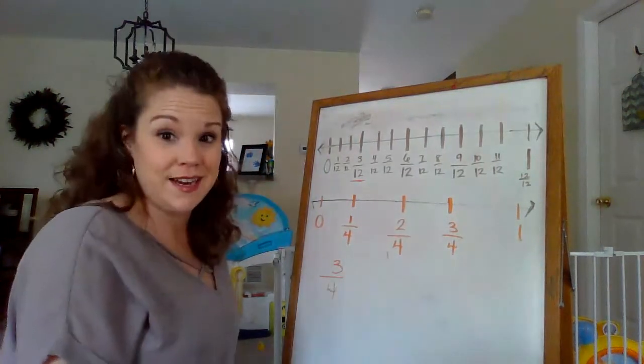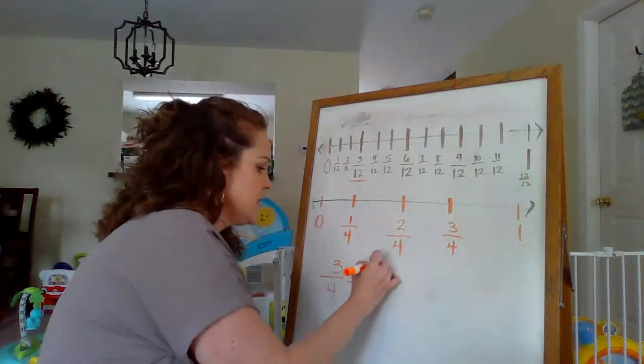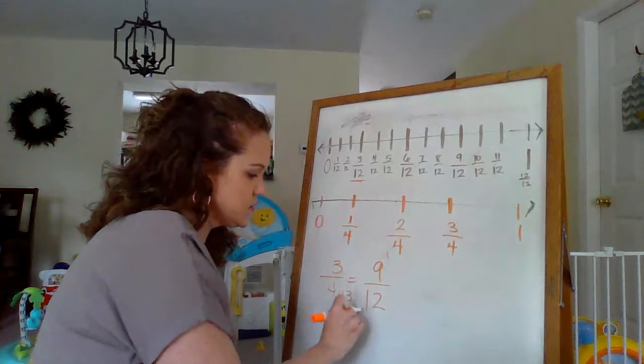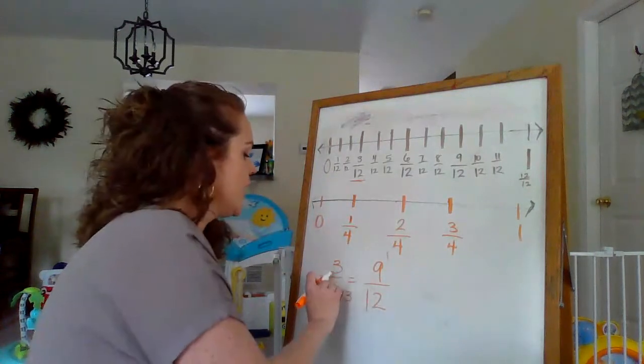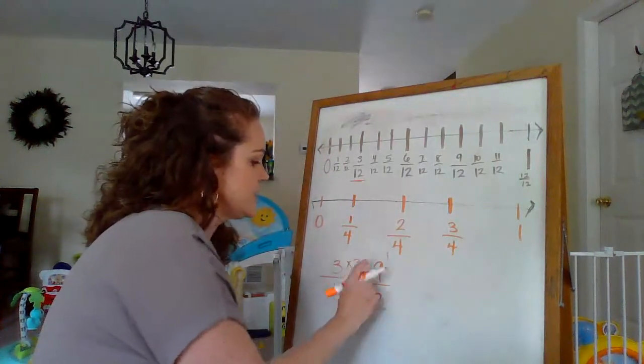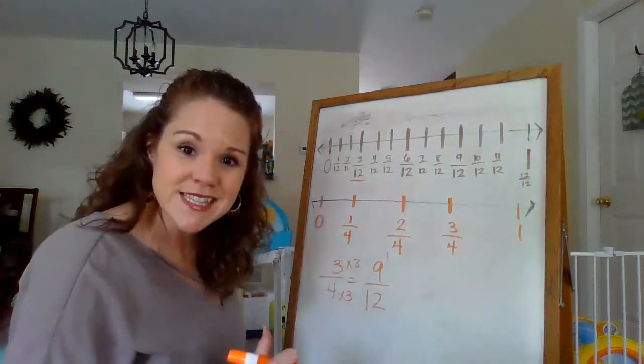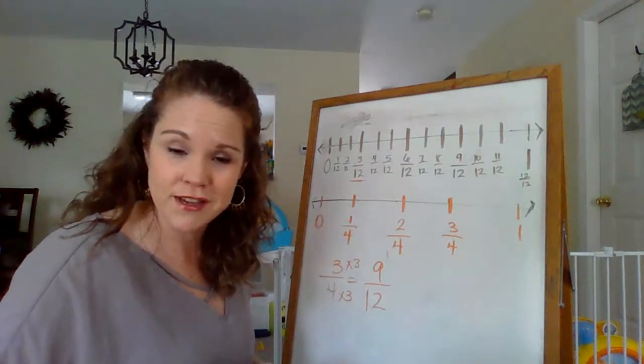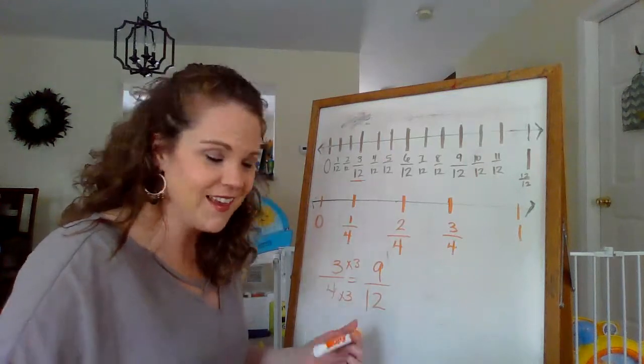So maybe let's try the 9 twelfths and see what happens. So let's see. So we said 4 times 3 equals 12. Mm-hmm. And then, is 3 times 3, 9? It is. So 9 twelfths and 3 fourths are equivalent to each other. Yay.